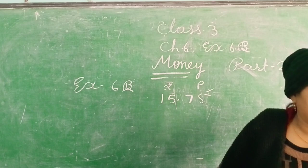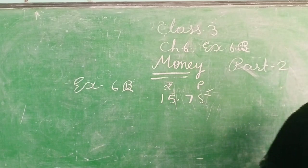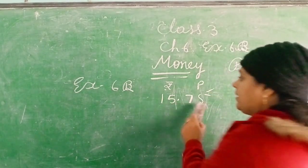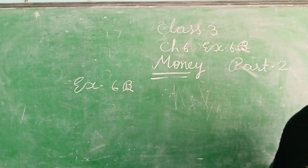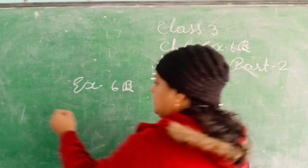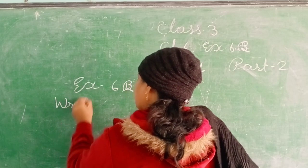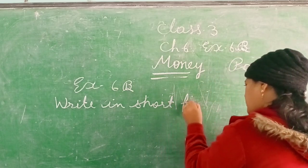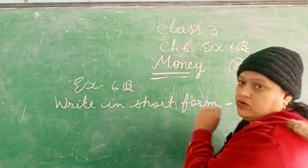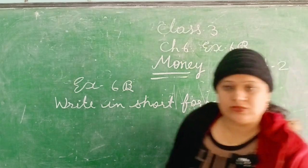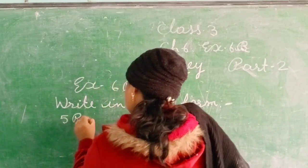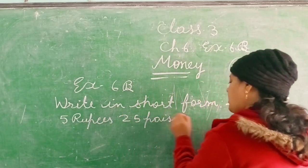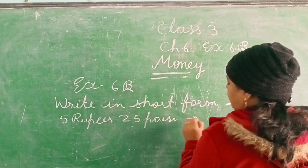Ab chaliye exercise. Write in the short form. To humein kya question diya gaya hai bachche? Short form mein humein likhna hai, aur humein number diya gaya hai: 5 rupees 25 paise.